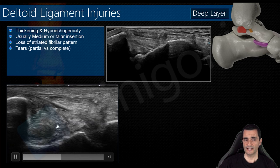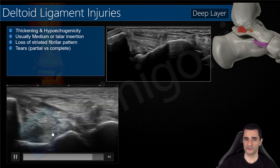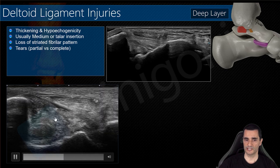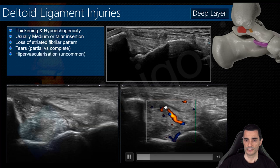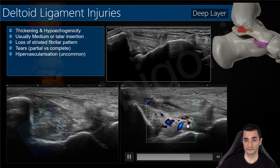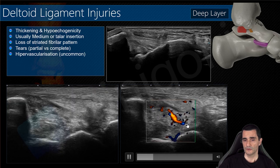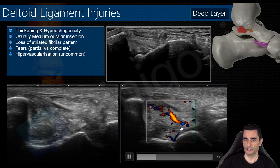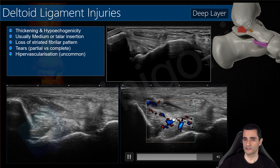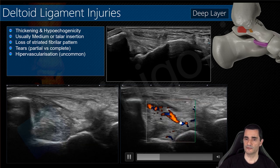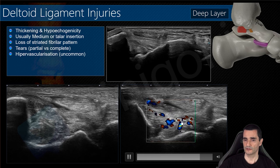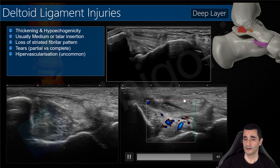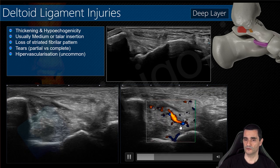We will often find tears inside the ligament. This is an example of a partial tear of the deep area of the posterior tibiotalar ligament and its vascularization on Doppler. When checking vascularization, always remember to avoid stretching the ligament before performing Doppler, because if the ligament is stretched the Doppler signal will not be present. Also, don't push with the probe because you will collapse the vessels.